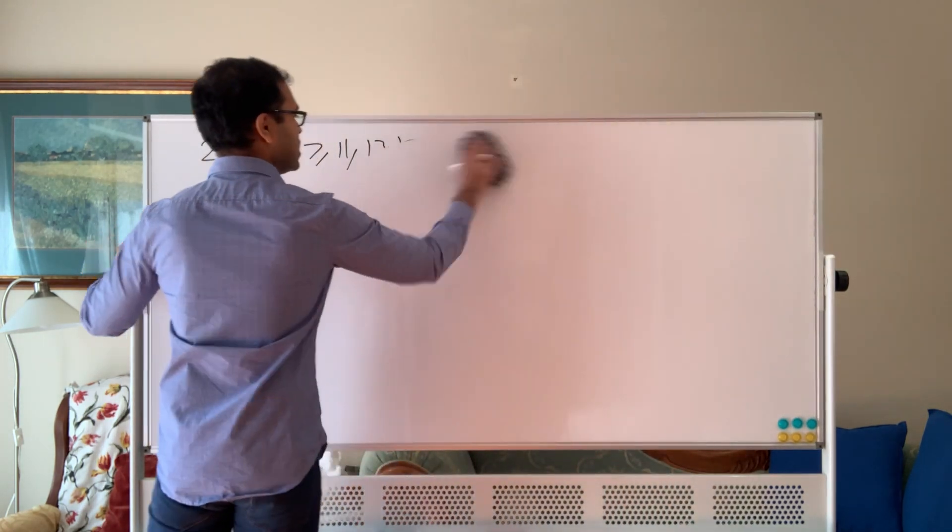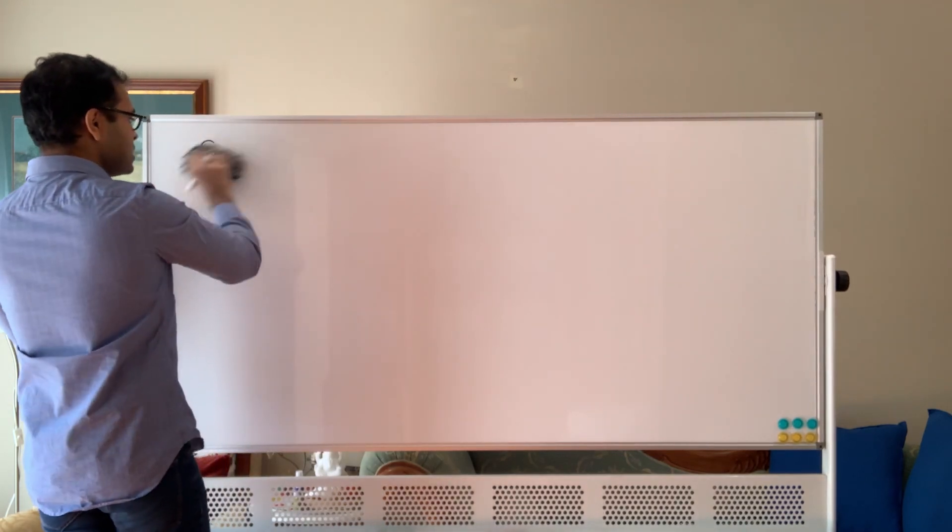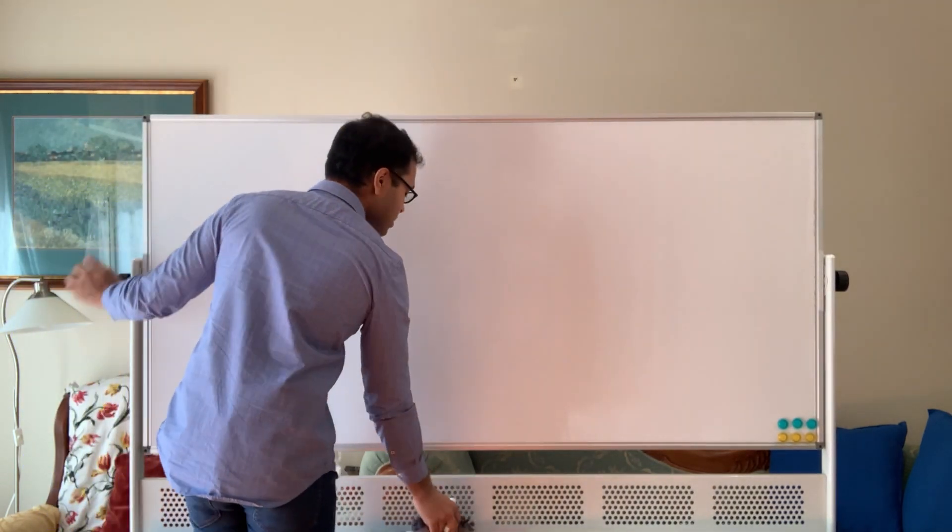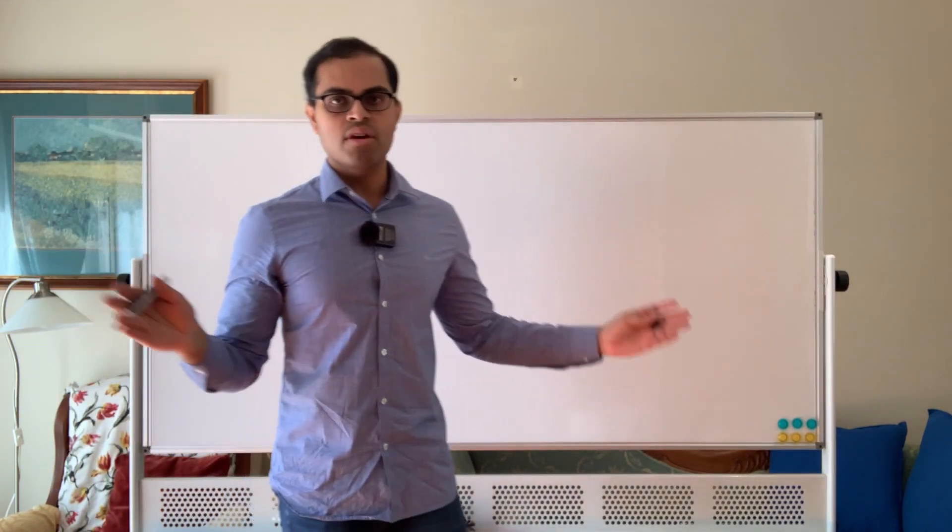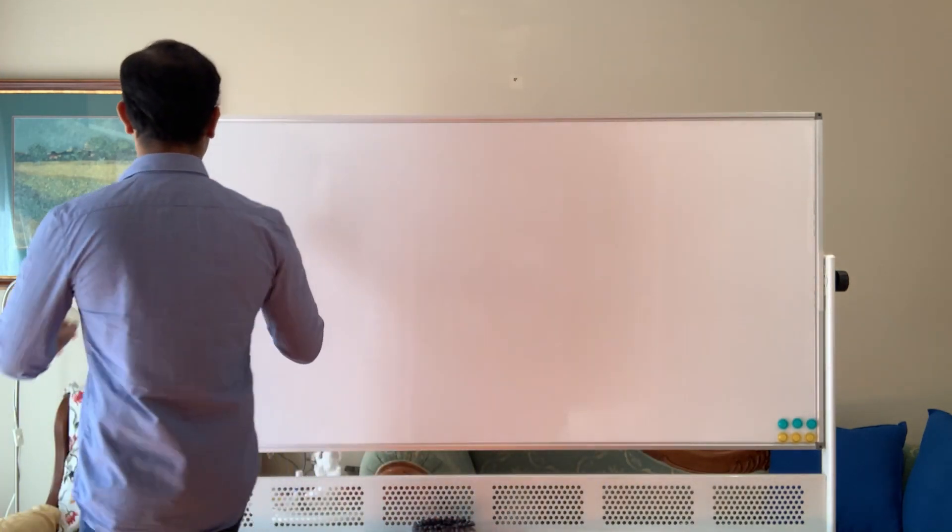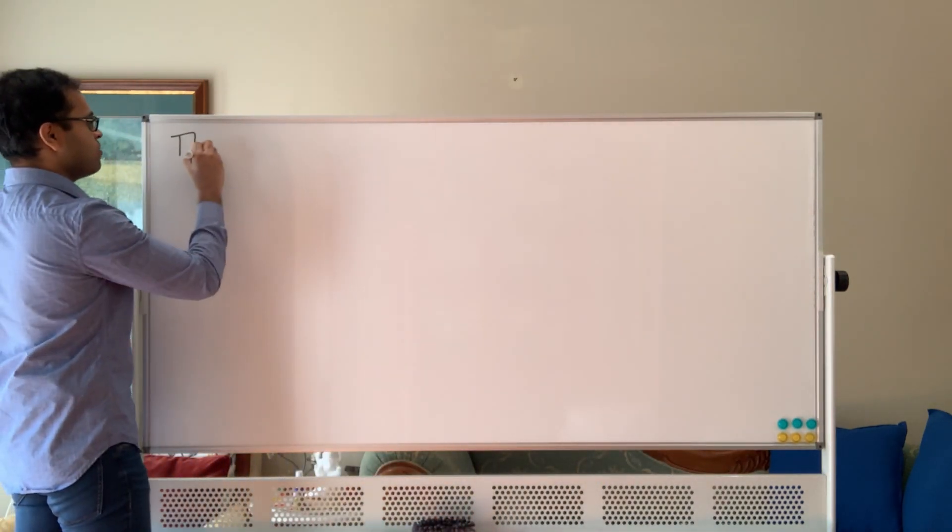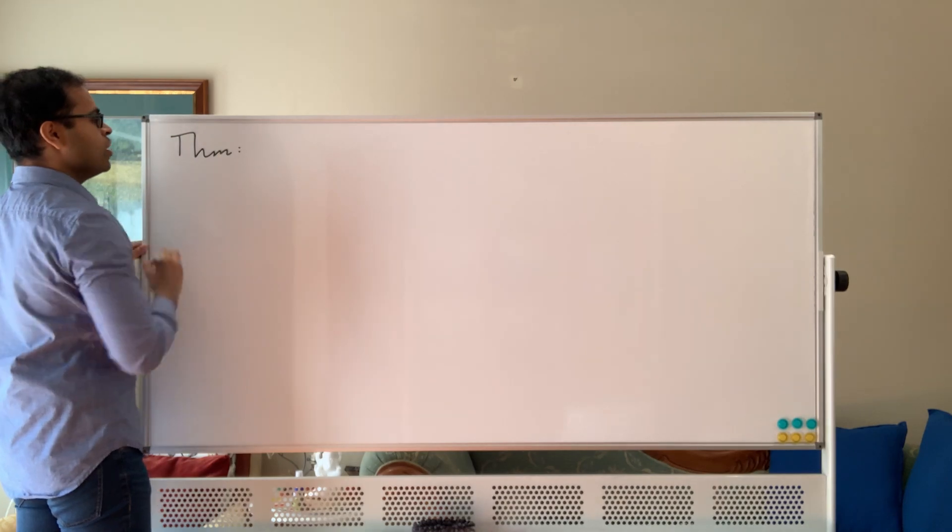This is Euclid's proof that there are infinitely many primes and it is a slightly abstract proof, but this video is for you even if you have no introduction to mathematical proofs. I want to sort of illustrate this because this is one of the first fun examples of a mathematical proof.